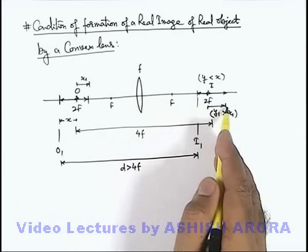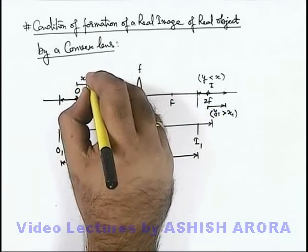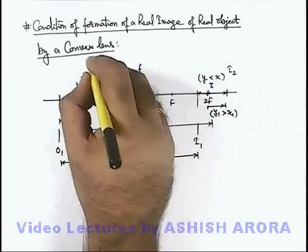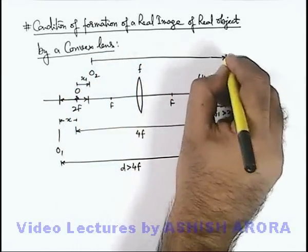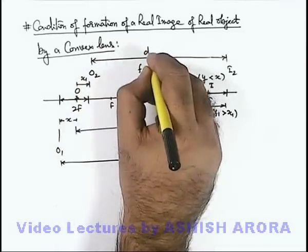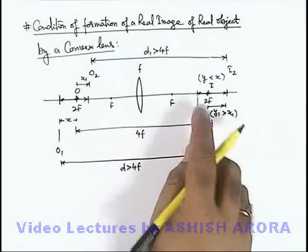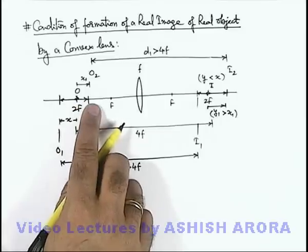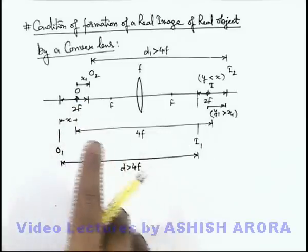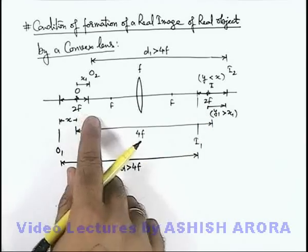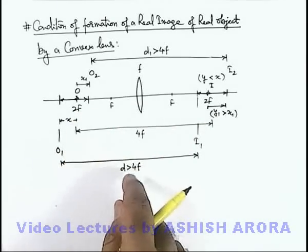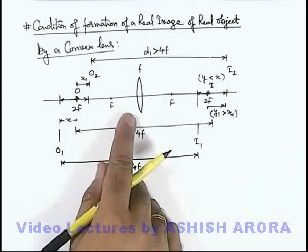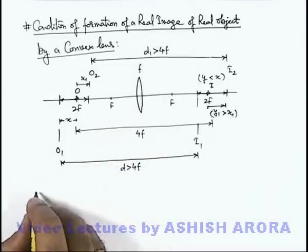So on displacing the object by x1, the image will be displaced by more than x1. For the final situation, with object position O2 and image position I2, the separation d1 will again be greater than 4f, because the image is displaced by more than the object. Therefore, for a real object and real image anywhere on the principal axis, the separation between them will always be greater than or equal to 4 times the focal length.